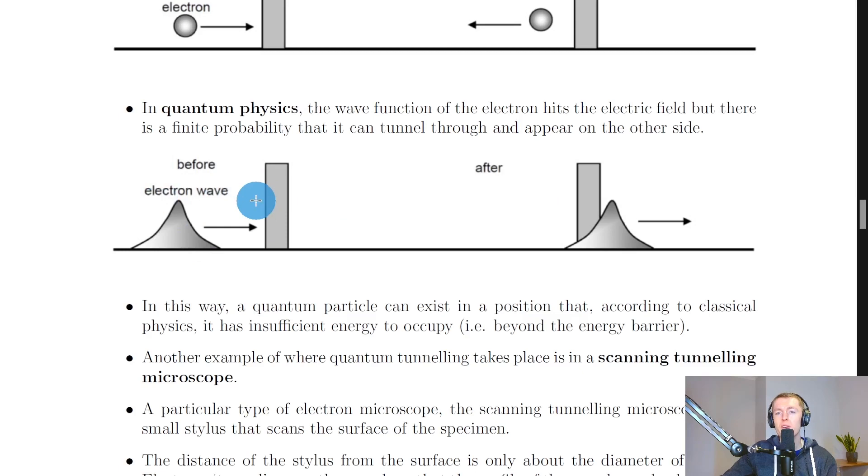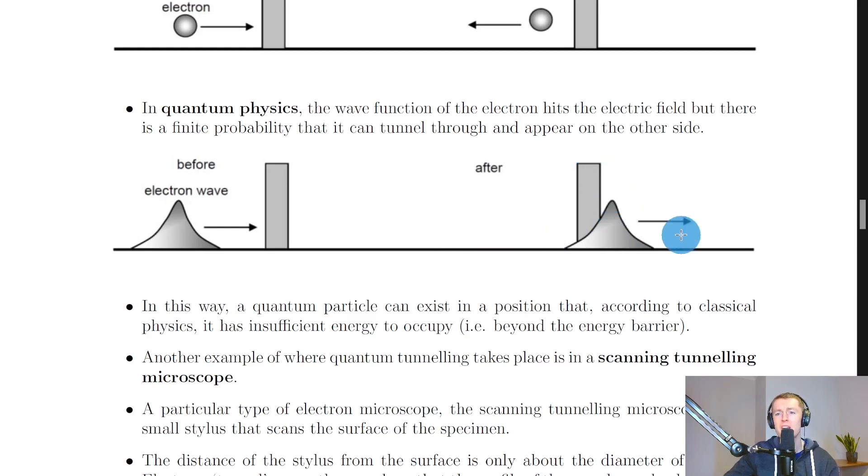If we considered the electron wave function to have a well-defined momentum but a not so well-defined position, then there's a finite probability that it could tunnel through this potential energy barrier. In this way a quantum particle can exist in a position that according to classical physics it has insufficient energy to occupy, beyond the energy barrier.